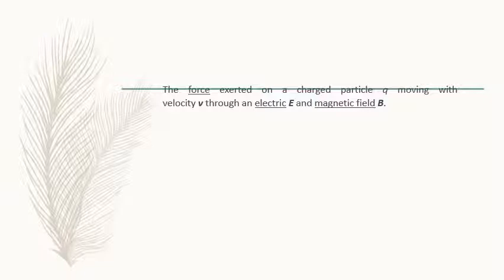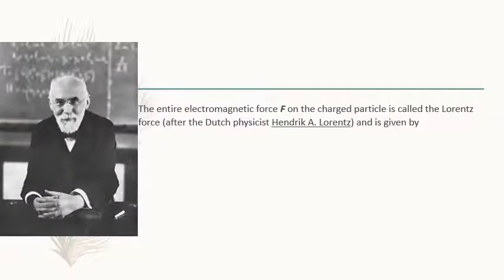This gives a lot of deviation in the path of the charged particles, which was given by Lorentz. So whenever we talk about Lorentz force, we must know this is the force exerted on — or experienced by — a charged particle when the charged particle is moving under the effect of both electric and magnetic fields. The entire electromagnetic force on the charged particle is called Lorentz force.